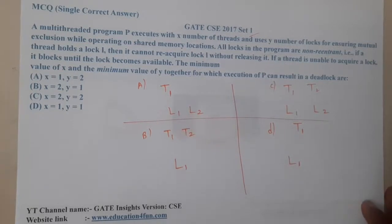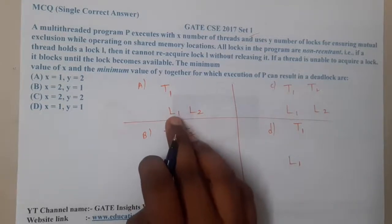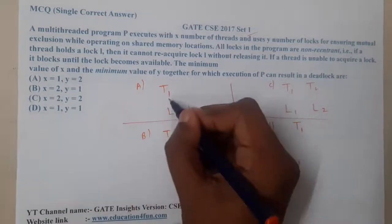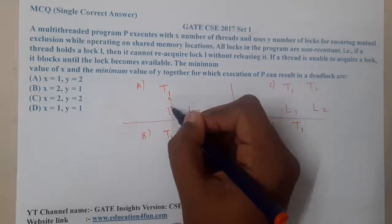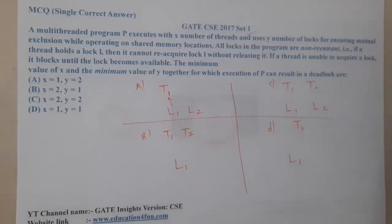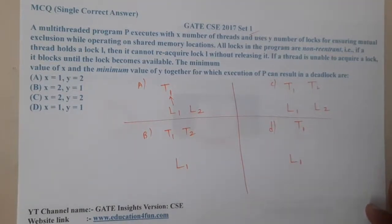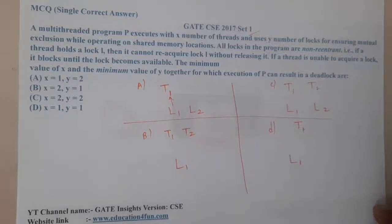All locks in the program are non-reentrant, so if a thread holds a particular lock and wants to acquire another copy of it, it must release it first and then reacquire. If it is unable to acquire a lock, it goes into the blocked state and continues only when the lock is released. The question asks for the minimum x and y to form a deadlock.